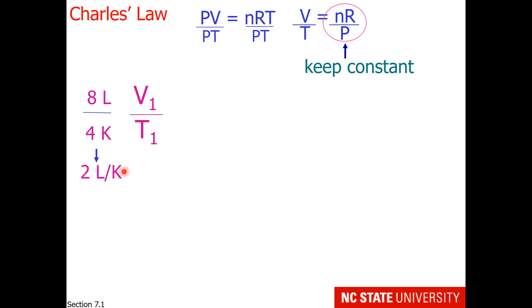So this computes to 2 liters per kelvin. That means if I change conditions, the ratio still needs to be 2 liters per kelvin. So imagine the temperature warms up to 8 kelvin. That also means the volume of the gas will expand to 16 liters to keep the same ratio. So this is what's called directly proportional. When temperature increases, volume increases.